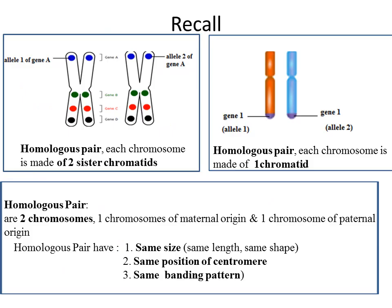Now let's do some recall. In the pictures we have a homologous pair. A homologous pair means two chromosomes — one maternal from the mother and one paternal from the father. We identify a homologous pair based on size, position of the centromere, and banding pattern. The centromere is what joins the two sister chromatids together, and the banding pattern shows the positions of the genes. It doesn't matter if the chromosomes of the homologous pair are made up of two sister chromatids or one — they are still a homologous pair.